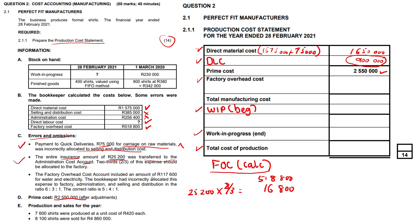The factory overhead cost account included an amount of 117,600 rands for wattage in electricity. The bookkeeper incorrectly allocated this expense to factory, admin, and selling in the ratio of 6:3:1. The correct ratio is 5:4:1. This is an unusual and challenging question. The 117,600 currently sitting in factory overheads represents six-tenths of the total electricity amount. So we multiply by 10 and divide by 6 to reverse that and find the original total.